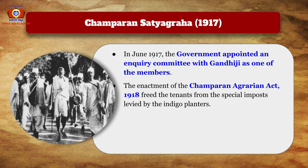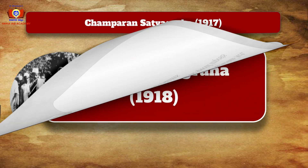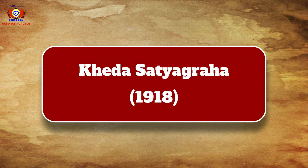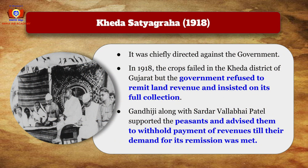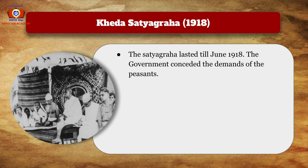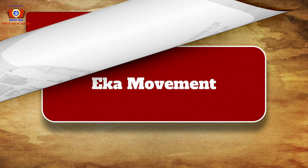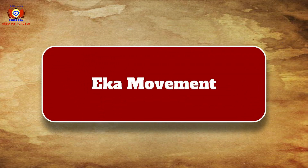The second successful struggle was the Kheda Satyagraha of 1918 under Gandhiji's supervision. It was chiefly directed against the government after crops failed in Kheda district of Gujarat, but the government refused to remit land revenues and insisted on full collection. Gandhiji along with Sardar Vallabhbhai Patel supported the peasants and advised them to withhold payment of revenue till their demands were met. The Satyagraha lasted till June 1918, and the government conceded to the peasants' demands.